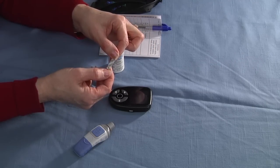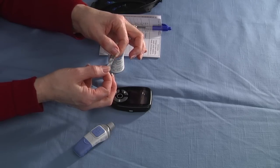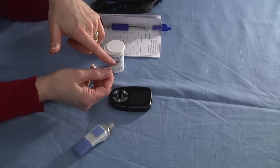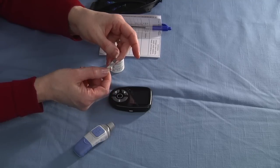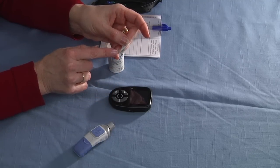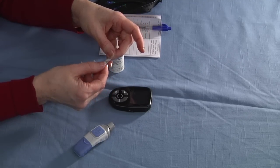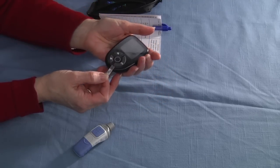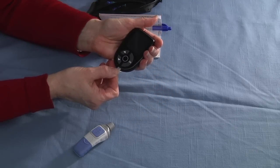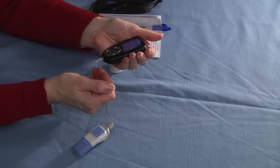These strips are very user-friendly, meaning I can touch them all over. The end with the lines is usually the end that will go into your meter. The side that has the little opening is where the blood will go. So pick up your meter, slide the strip in, and that will turn your meter on.